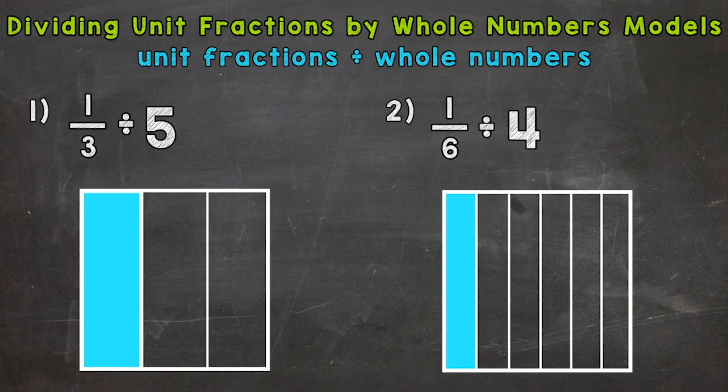So let's jump right into number 1, where we have 1/3 divided by 5. We're starting with 1/3, and we're dividing that 1/3 into 5 equal groups. I started with a model of 1/3 here. So we need to split that into 5 equal groups.